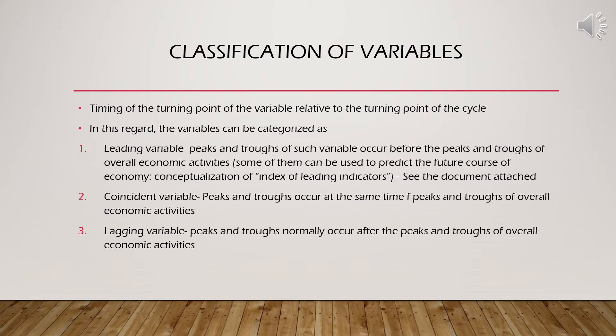The third type is called the lagging variable. What happens is the economy reaches its peak first, and after that the value of such variables reaches its peak. Whenever the economy falls, the value of the variable falls but at a slower pace. That is why we call it a lagging variable — it moves slower than overall economic activities.